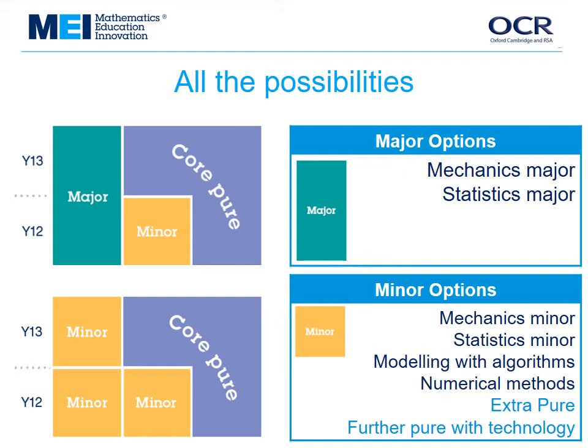There are two attractive features of the MEI spec. First, whatever you choose in Year 12, you can decide a bit later what to study in Year 13. Suppose you start with mechanics and stats in Year 12 — you can then continue with one of them, say mechanics major and stats minor, or do a completely different minor option in Year 13. Second, if you want to do some mechanics in Further Maths but think it's better to leave it until Year 13, after most of the mechanics from A-Level Maths is done, that's fine — do two other minor options in Year 12 and then mechanics minor in Year 13.